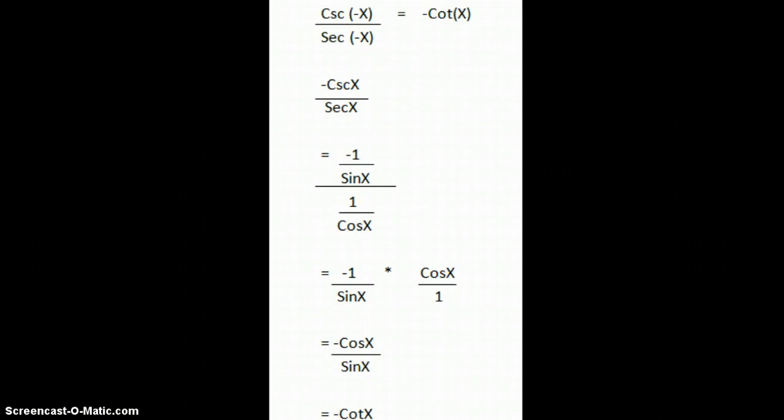Okay, example four is another verification problem. We have cosecant of negative x over secant of negative x equals the negative cotangent of x. So we have negative cosecant of x on top and positive secant of x on bottom. It's positive because based on your even and odd identities, secant always stays positive.